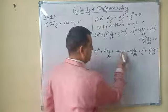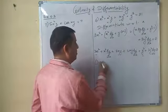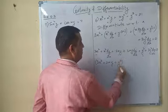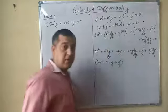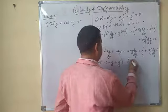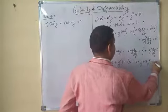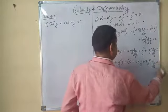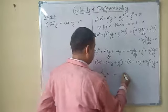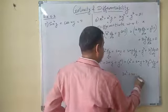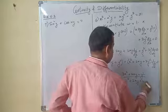Now group the terms. The three terms free from dy/dx are: 3x² + 2xy + y². The three terms containing dy/dx are grouped together. Taking dy/dx common gives: (x² + 2xy + 3y²)·(dy/dx) = 0. Therefore dy/dx = −(3x² + 2xy + y²) / (x² + 2xy + 3y²).